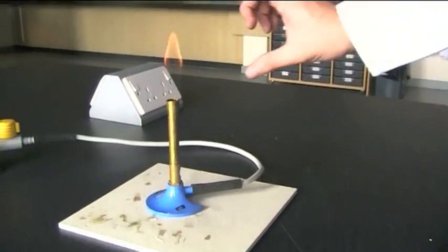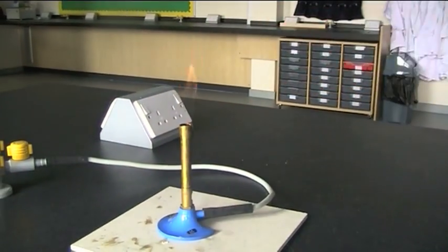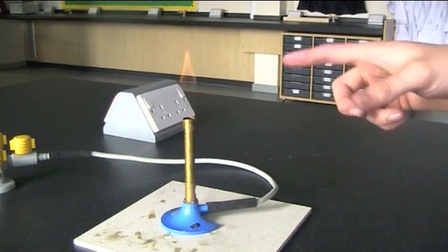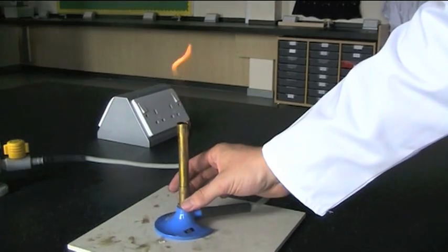Now that your Bunsen burner is lit, you can see that it has a beautiful orange flame here. So, I can see this Bunsen burner is on. Now, going back to why the air hole is closed, this is the reason.